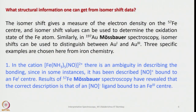What structural information can one get from isomer shift data? The isomer shift gives a measure of the electron density on the 57Fe center, and isomer shift values can be used to determine the oxidation state of the iron atom — it gives both electron density and oxidation state information. Similarly, in case of 197Au Mössbauer spectroscopy, isomer shift can be used to distinguish between Au(I) and Au(III).